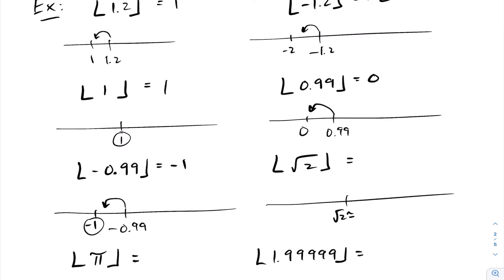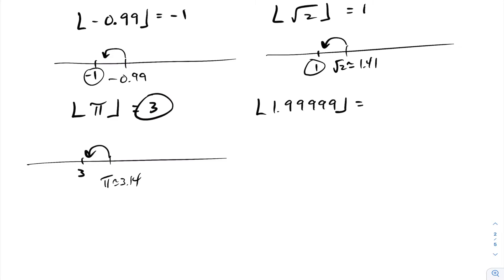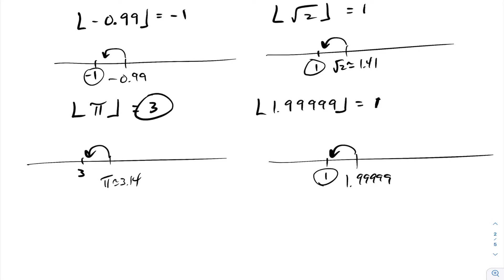For the square root of 2, we approximate it as approximately 1.41, so the floor of the square root of 2 is the largest integer less than that, which outputs a one. The floor of pi — since pi is approximately 3.14 — the floor is three. And for 1.99999, that also outputs a one, since one is the first integer encountered to the left.